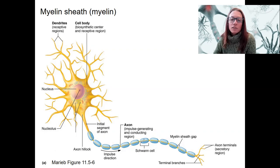And here, this would be in the PNS because they're Schwann cells that make up this myelin sheath. The myelin sheath is this entire thing, also called myelin.